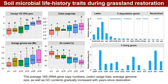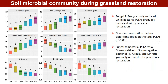The average 16S rRNA gene copy numbers, codon usage, average genome size, and GC content gradually increased with years since restoration. The average 16S rRNA gene copy number, fungal-to-bacterial PLFA ratio, gram-positive to gram-negative bacterial PLFA ratio, and K/r ratio gradually increased with years since restoration.